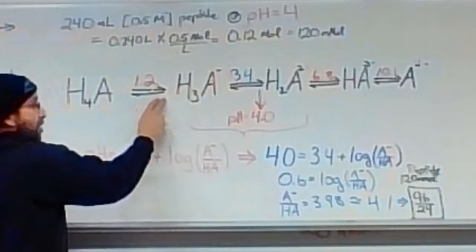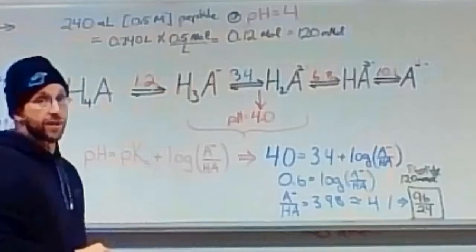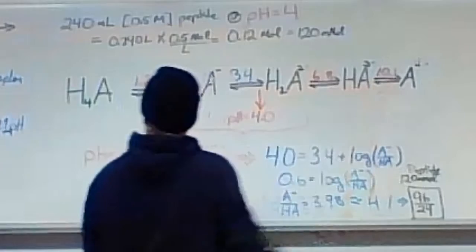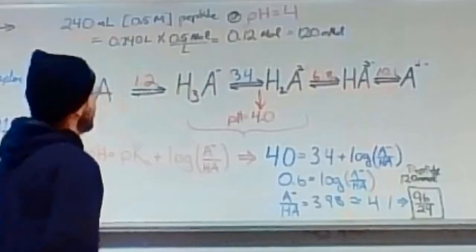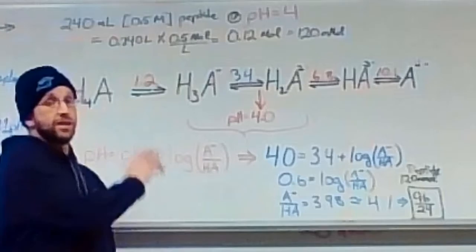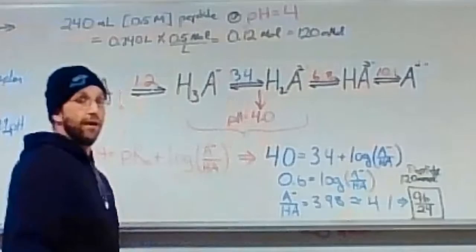Each equilibrium has a pKa associated with it. In this particular case, our problem gives us the pKas: 1.2, 3.4, 6.8, and 10.1. Knowing that we are starting in an equilibrium of a pH of 4, we are looking for the most appropriate buffering region in our system of equilibriums. pH of 4 is closest to 3.4.